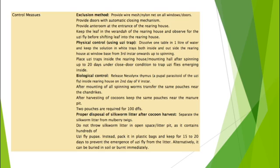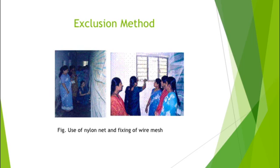Now we will discuss control measures to prevent the infestation of Uzi fly. There are various methods: exclusion methods, physical control, biological control, and others. The exclusion method basically involves avoiding contact of the Uzi fly with the silkworm. This can be done by using a nylon net enclosure, fixing mesh to windows and doors, or covering individual rearing trays with nylon net.